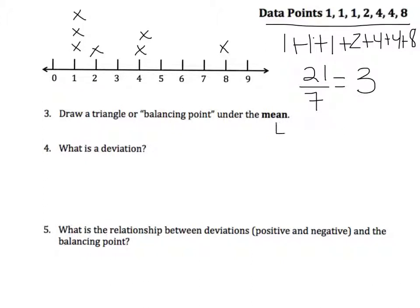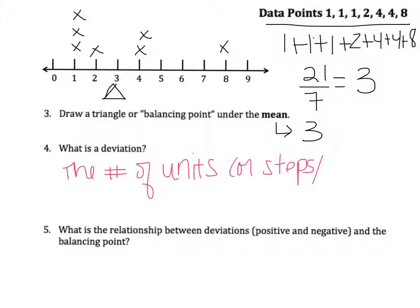One plus one plus one plus two plus four plus four plus eight equals 21. I have seven data points, which means my mean is three. So if the mean is three, I'm going to draw a triangle or a balancing point under that. This is going to help me understand the concept of a deviation. A deviation is the number of units, or you can think of them as steps or spaces, away from the mean.